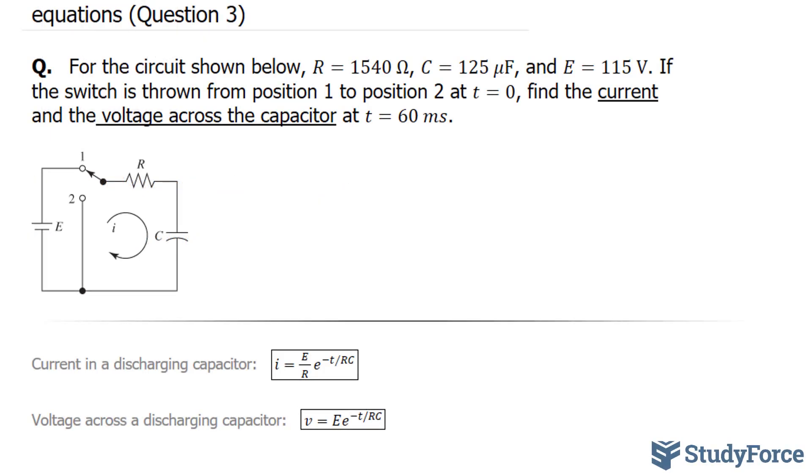So the first thing I'll do is substitute these values into both of these formulas. We're told the resistance is 1540 ohms, so I'll place that into here and there. I have current is equal to E, that's 115, I can replace that as well.